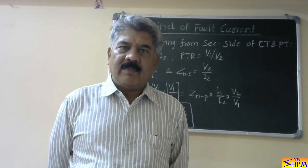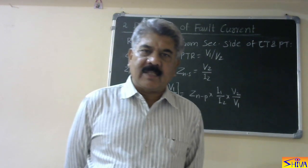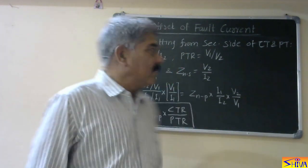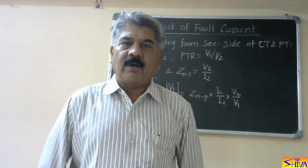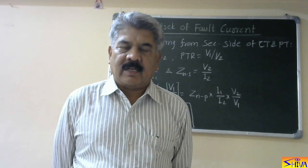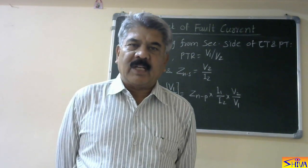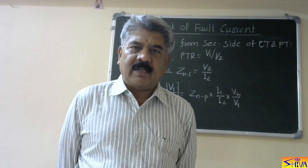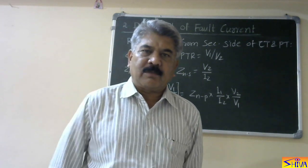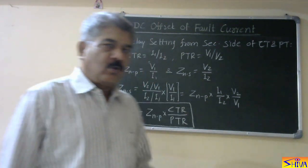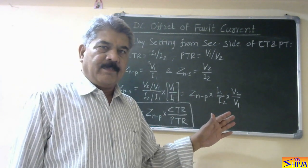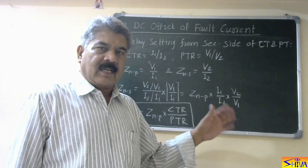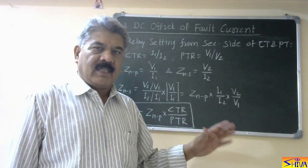Today, I will explain the second factor, that is the DC offset of the fault current. Before explaining this factor, I would like to explain how to find the setting of the relay from the secondary side of CT and PT.